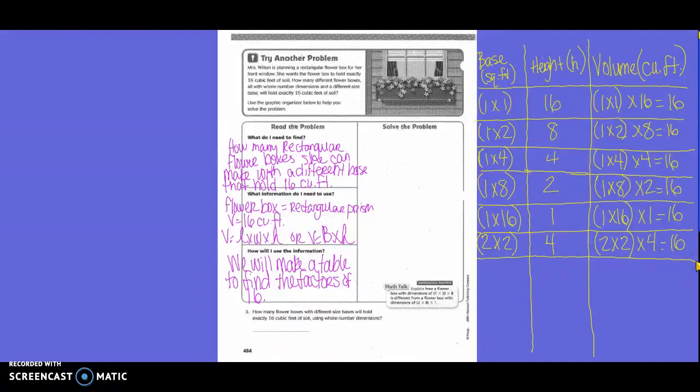Can I do 3? No. Can I use 4? Yep. So parentheses 2 times 4. 2 times 4 is what, guys? 8. So 8 times 2. So 2 times 4 times 2 equals 16. Why are we putting these things in parentheses? So we know what's grouped together, right? To find the base.